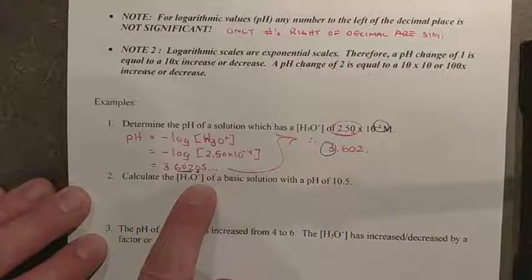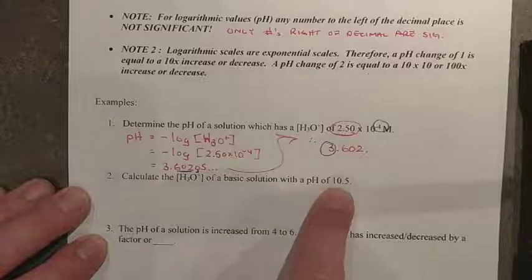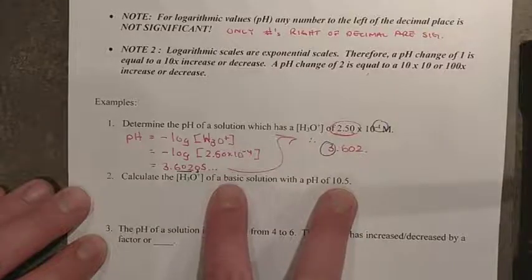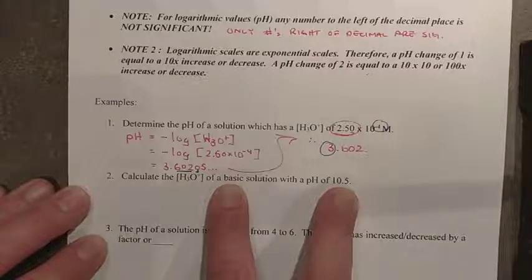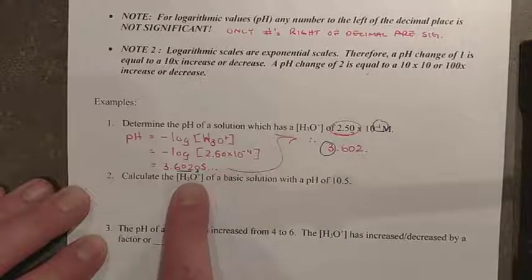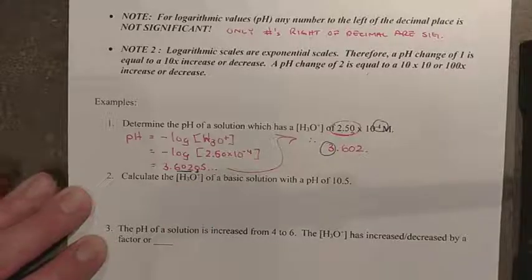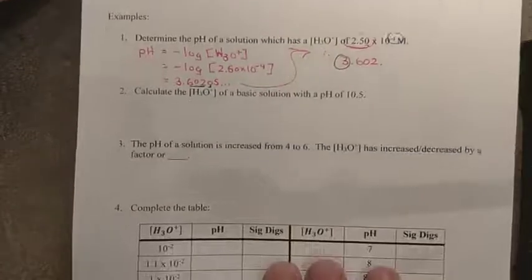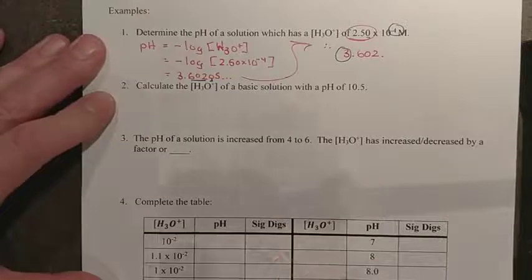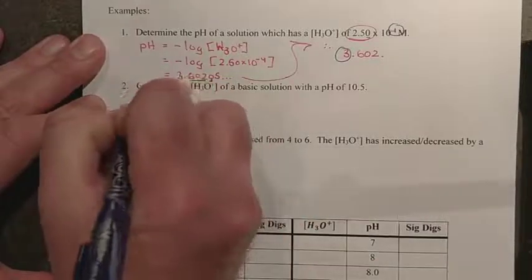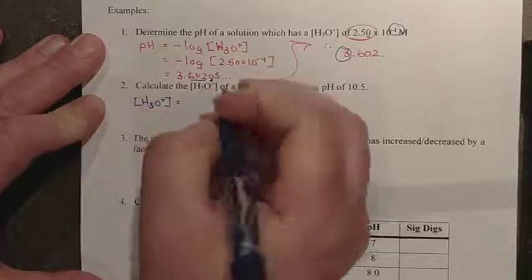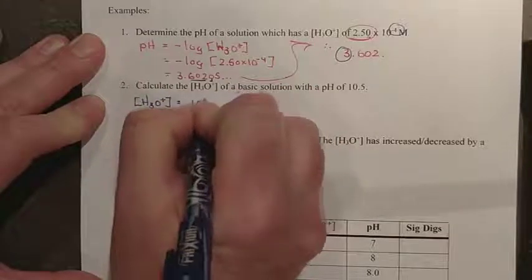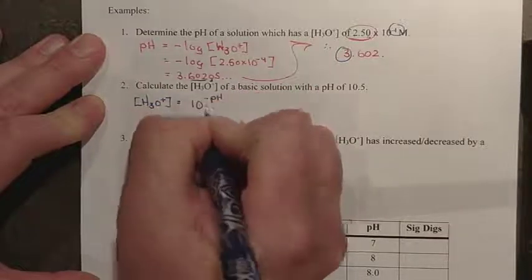Calculate the hydronium ion concentration of a basic solution that has a pH of 10.5. Well, it makes sense that this is basic because the pH is greater than 7. And because the pH is greater than 7, this should mean a very small concentration of hydronium. So, our hydronium ion concentration formula is simply this. The mole per liter hydronium ion concentration is really just base 10 raised to the power of the negative pH.